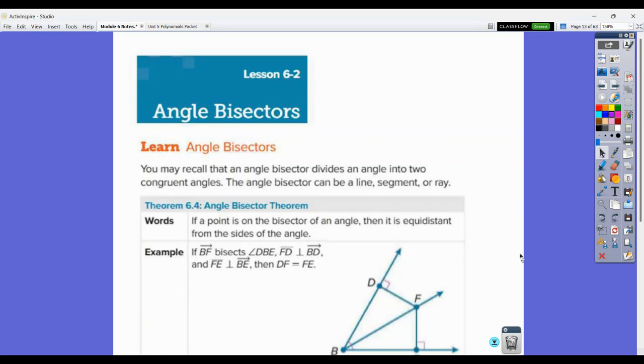Hi students, we're going to cover 6.2 on angle bisectors in this video. You may recall that an angle bisector divides an angle into two congruent angles. We had the angle drawn, and then we bisected that angle by splitting right down the middle and making these two congruent angles. So that's what an angle bisector is.